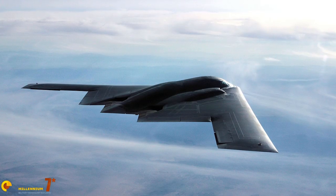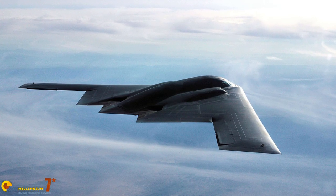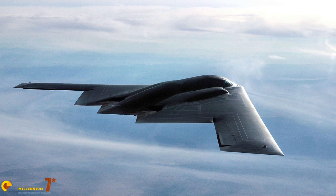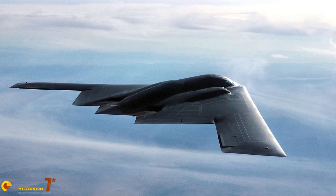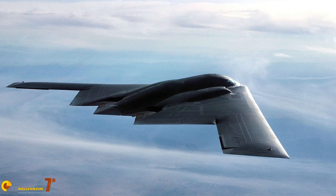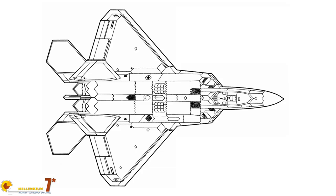Did you ever notice how many parallel lines there are in a stealth aircraft? Aerodynamic surfaces, leading and trailing edges, are generally aligned, but also the edges of the openings of the airframes are aligned in the same way. Look how many parallel lines — for example here, or here, or even here.